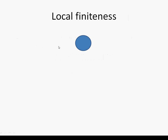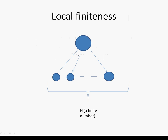So first, local finiteness. Local finiteness just means there are a finite number of children. For example, this is a parent node and these are the children — let's say there are n children, and n should be a finite number. That's it. Local finiteness just means you have a finite number of children.